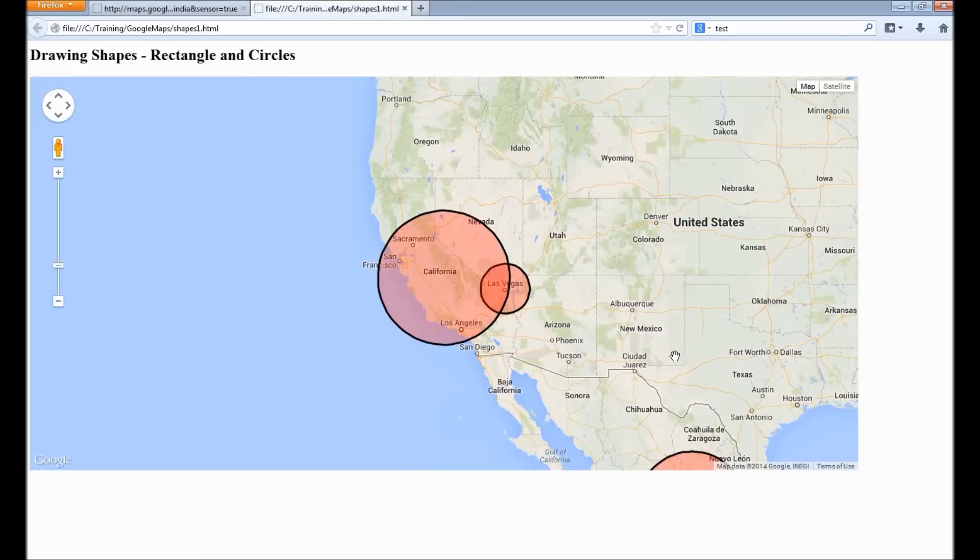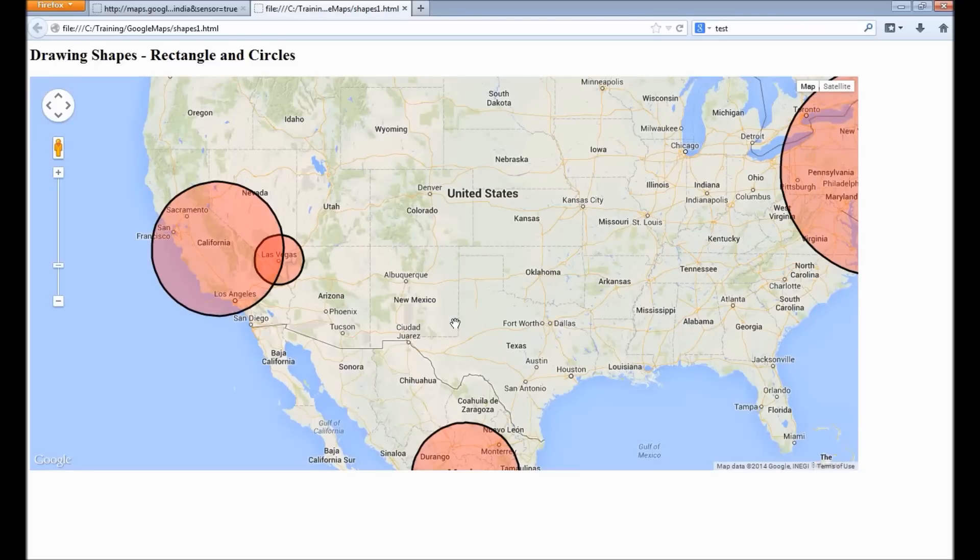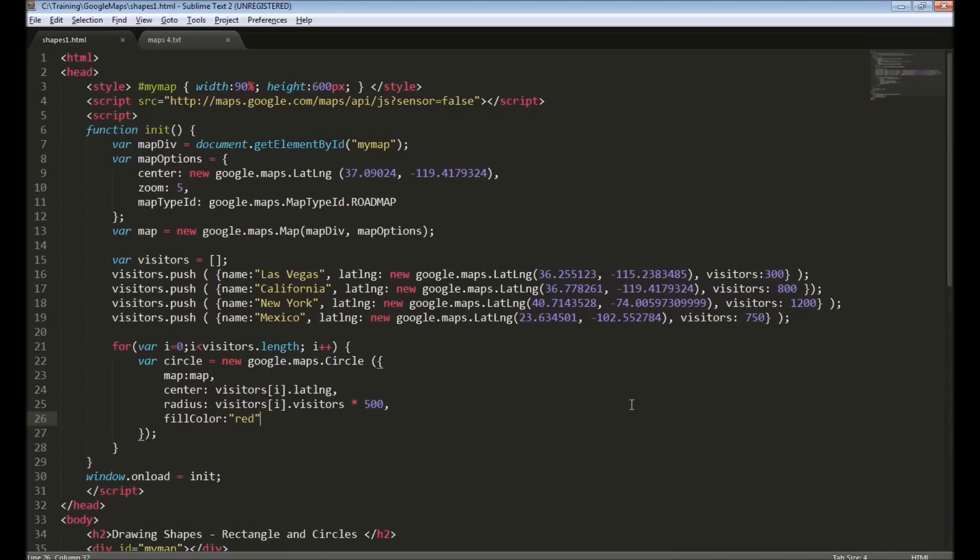You can see that circles are drawn on the map depending on the data we have. See, the New York circle is a little bigger compared to California or Las Vegas. This is again just an example on how we can use data to draw different things on the map.